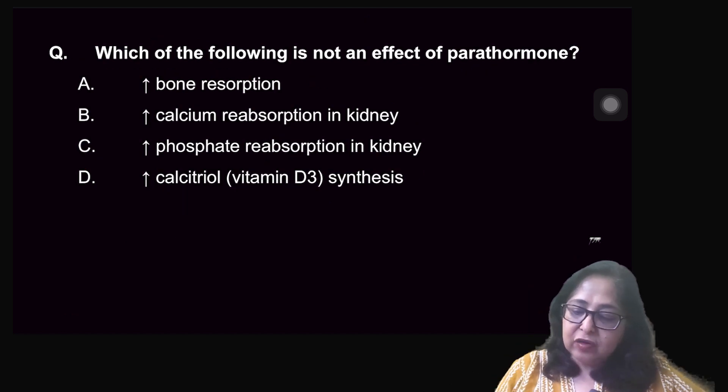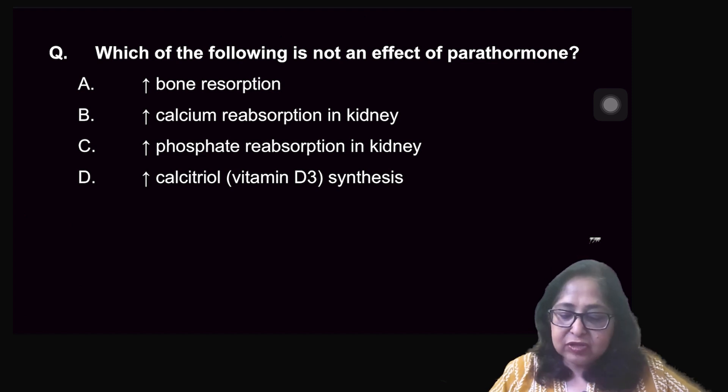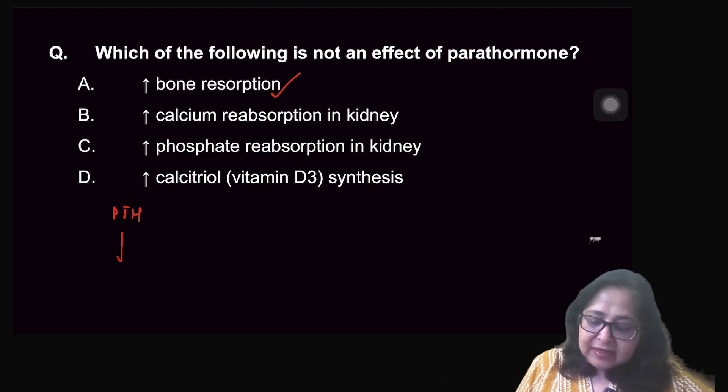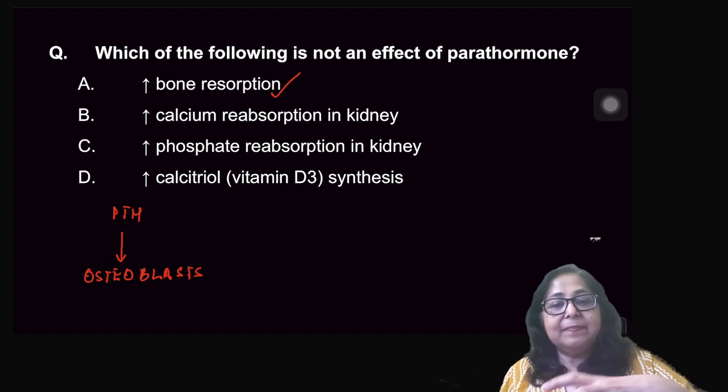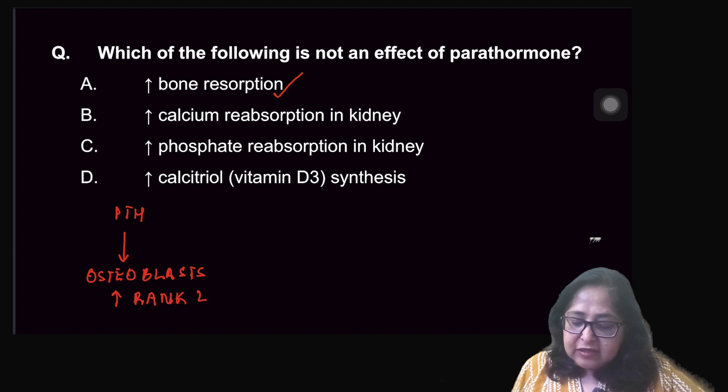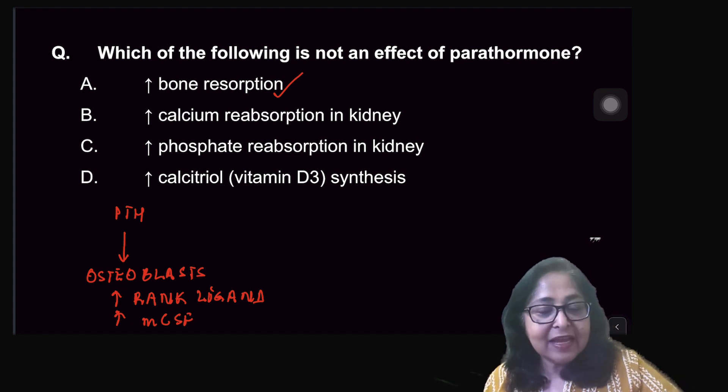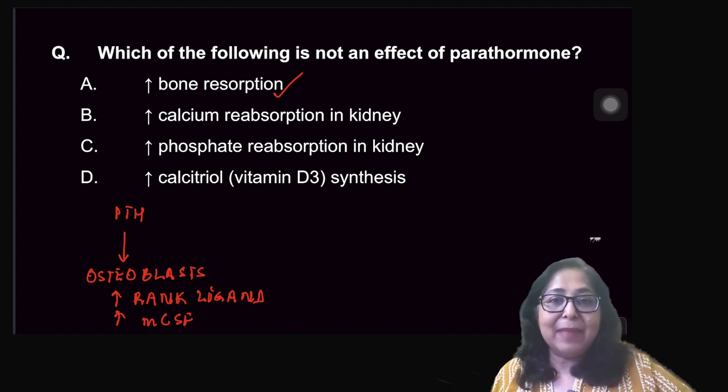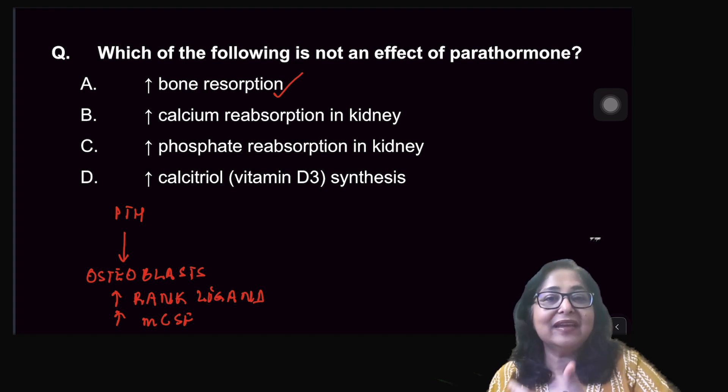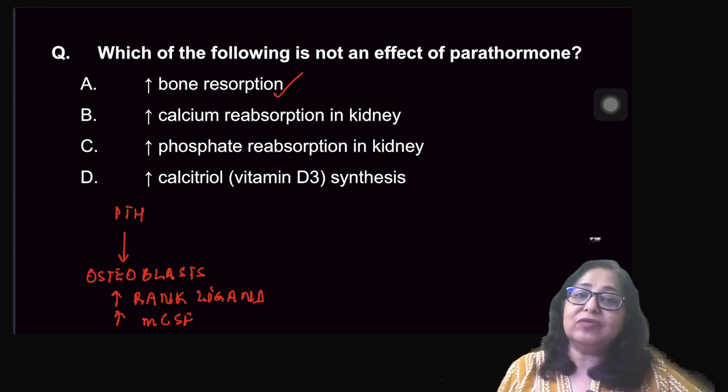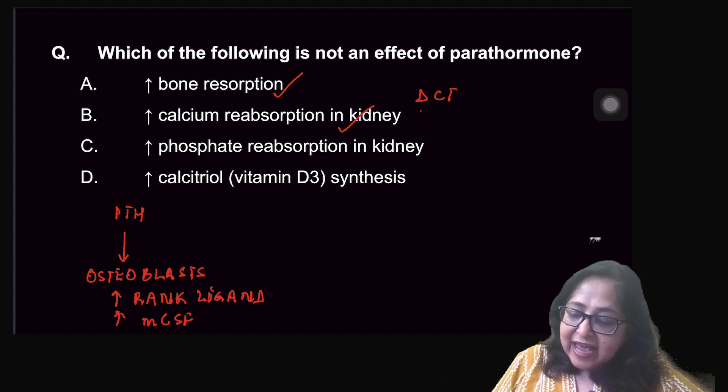Which of the following is not an action of parathormone? Parathormone increases bone resorption. That is true. Please remember, parathormone receptors are on osteoblasts. But osteoblasts secrete something known as RANK ligand which in turn increases the monocyte colony stimulating factor. And the monocyte colony stimulating factor acts on osteoclastic precursor cells to enhance their maturation to form mature osteoclasts. So even though the parathormone receptor is present on the osteoblasts, it causes a secondary increase in osteoclastic activity. So it increases bone resorption. It increases the calcium reabsorption in the kidney. This is true. It acts on the DCT and increases the calcium reabsorption.